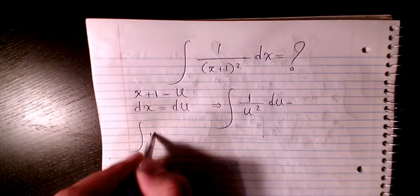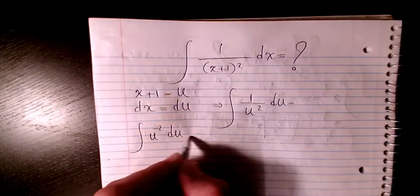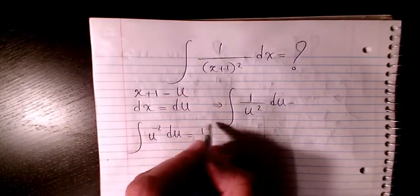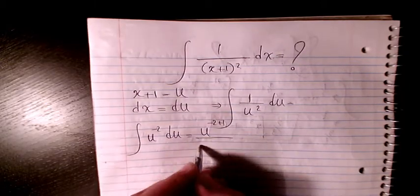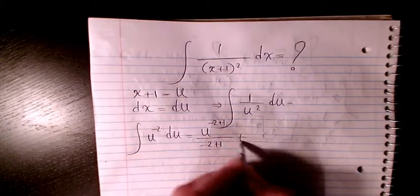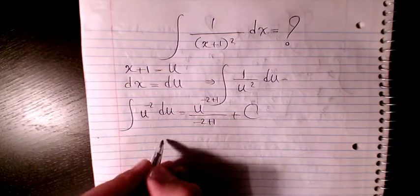So I will have u to the power of negative 2 du, which will be u to the power of negative 2 plus 1 divided by negative 2 plus 1 plus a constant number. So it's going to be u to the power of negative 1 divided by negative 1 plus C, or negative u to the power of negative 1 plus C.